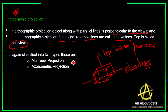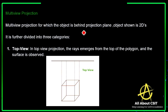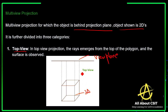Multi-view projection means the object is behind the projection plane and the object is shown in 2D. It is divided into three categories: top view, front view, and side view. In the top view projection, the rays emerge from the top of the polygon, and the lines are parallel to each other and perpendicular to the view plane.